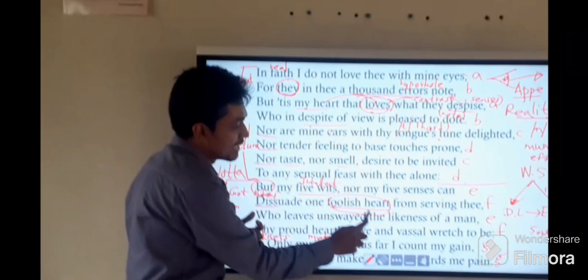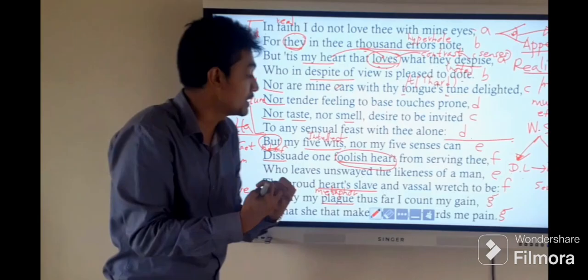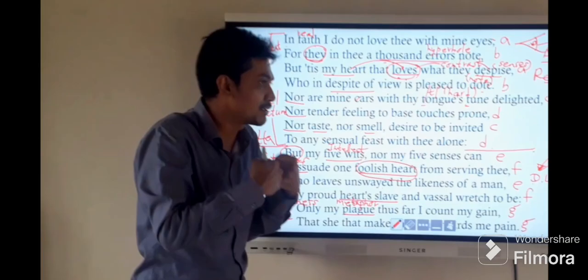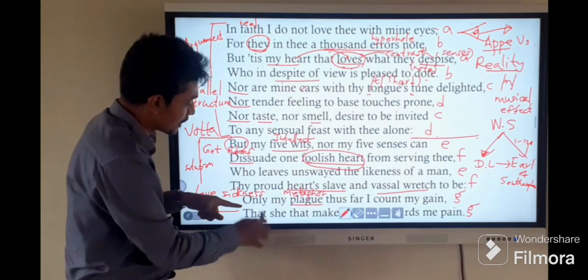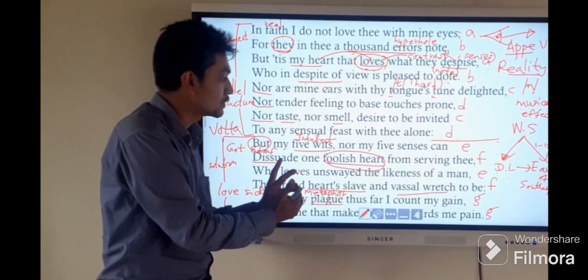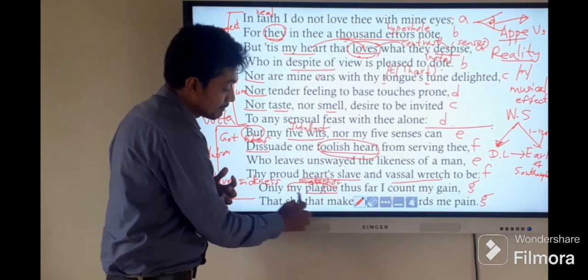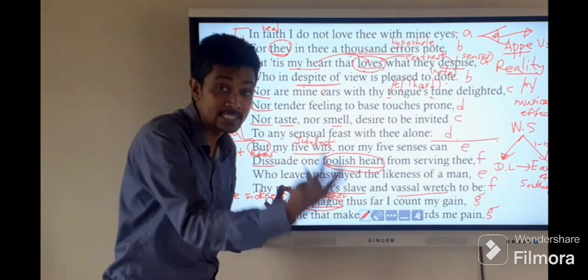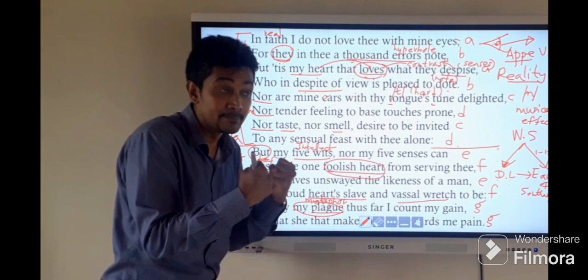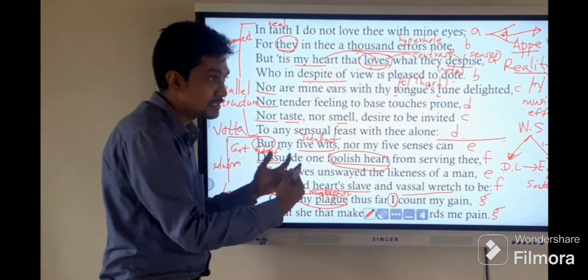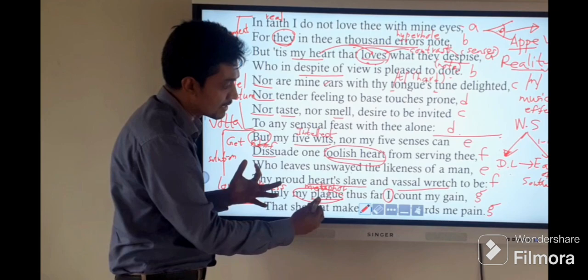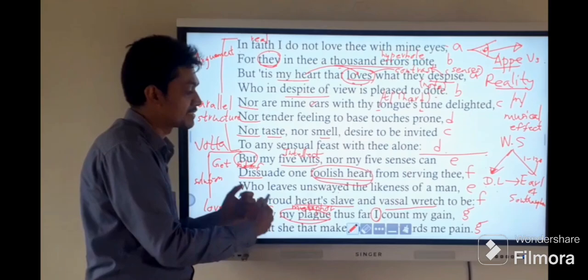It is very difficult to get rid of that kind of love. Now the proud heart's slave. The heart has become a slave to the dark lady. In other words, it is a kind of disease, a vassal wretch to be. The last two lines, a couplet, argues strongly about this point. Love's plague means love sickness. Only my plague thus far I count my gain, that she that makes me sin awards me pain. The final result is the sadness that you gain from this irresistible attachment towards the dark lady.